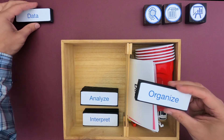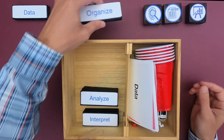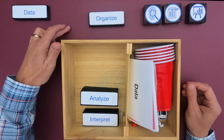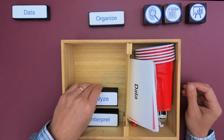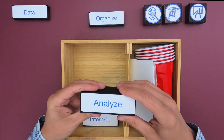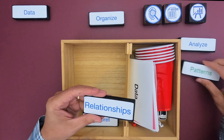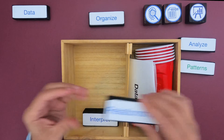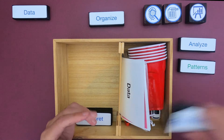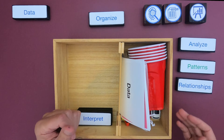The first thing you always want to do is look at the data, and then you want to organize all the data. If it's from one individual or a group of individuals, we want to put that all together in one data table. Next, we want to analyze the data — we're really going to be looking for two things: patterns, including similarities and differences, and relationships within the data.